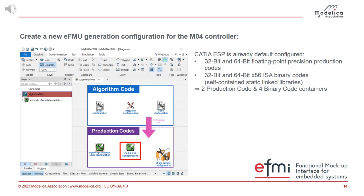You get a 32-bit and a 64-bit floating point precision production code, plus binary code containers. In this case, it's 32-bit and 64-bit binaries for Windows. This makes four binary code containers: 32-bit floating point / 32-bit binary, 32-bit floating point / 64-bit binary, 64-bit floating point / 32-bit binary, and 64-bit floating point / 64-bit binary. This is the default configuration, and we leave it as is.